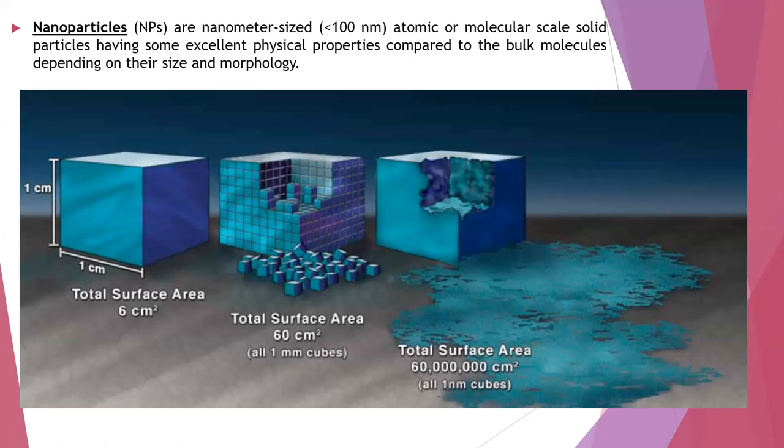The benefit of this increased surface area is that it can interact with many more particles, tissues, or microbes, so it can perform action in a better manner. It can increase catalytic reactions, or it can penetrate cells — the permeability of this material is increased. Basically, the size of the material matters, and when the size is reduced to nanometers, its shape and properties change.